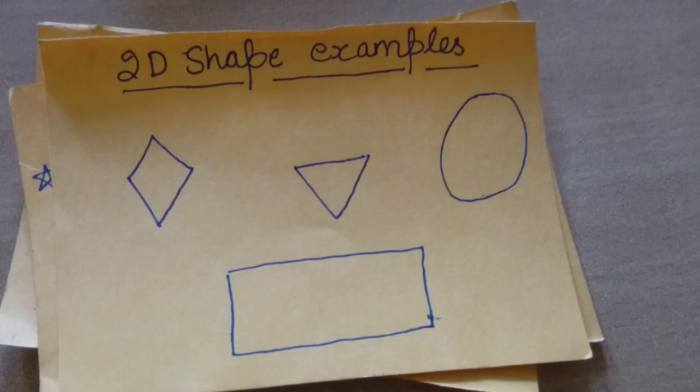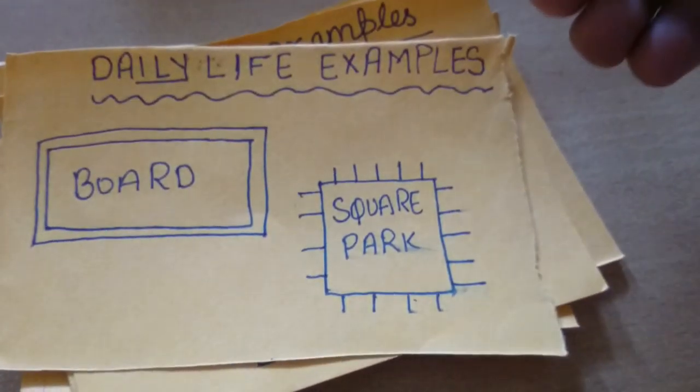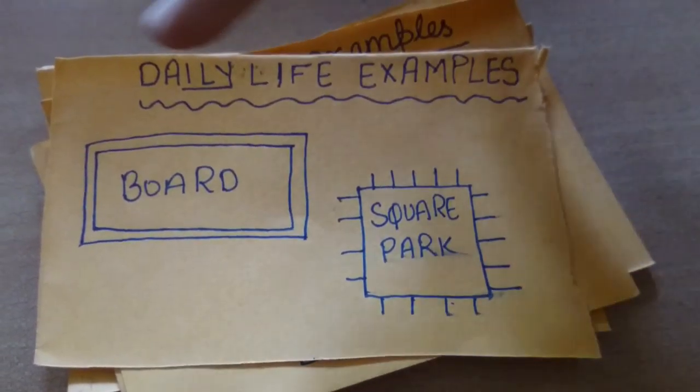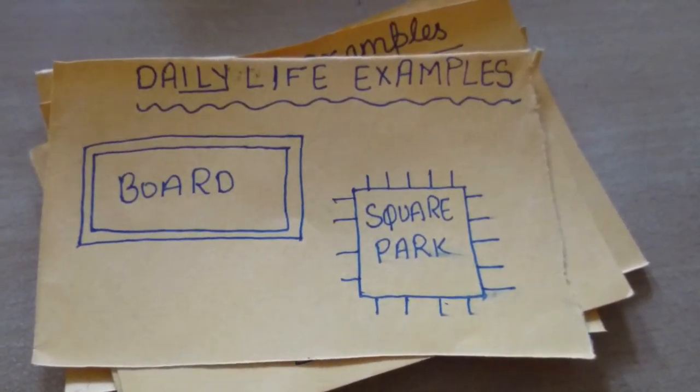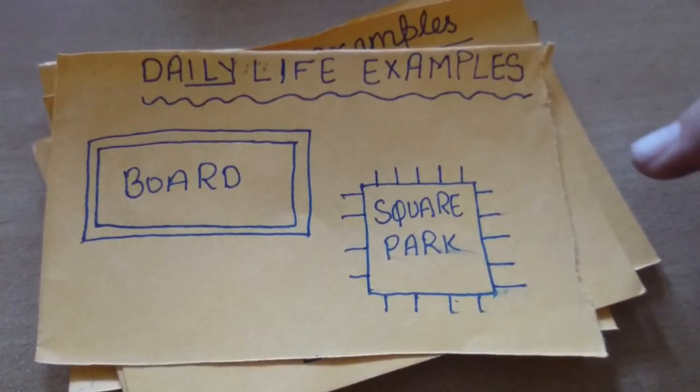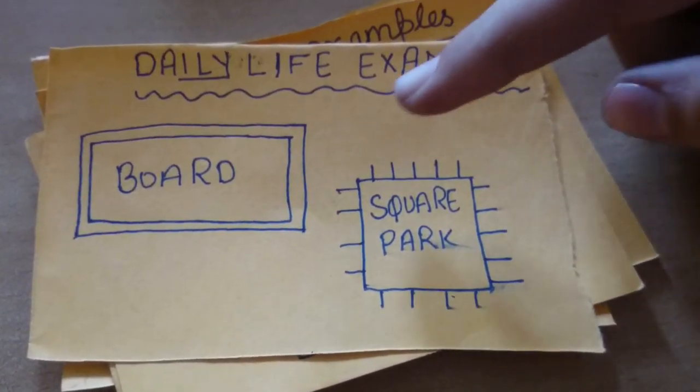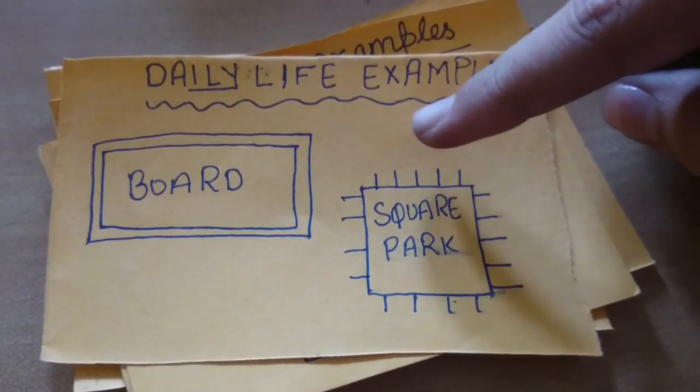Now let's take some daily life examples. Suppose we need to create a border for a board. Then first we will find the perimeter of the board and then make the border. Second example, let's take a square park which we have to fence. First, we will find the perimeter of the square park and then fence it.